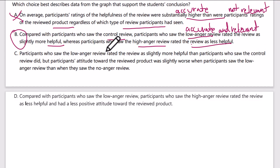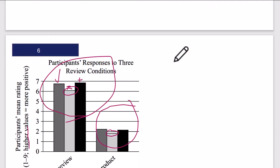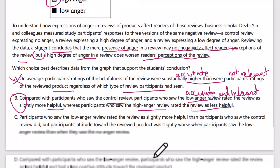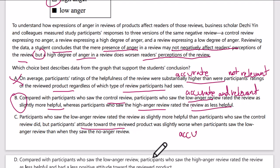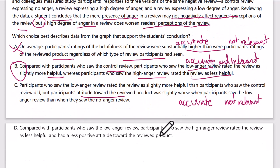Let's quickly check C and D. Answer C says participants who saw the low anger review rated it as slightly more helpful, but participants' attitude toward the reviewed product was slightly worse when they saw the low anger review than when they saw the no anger review. The second part is accurate — it was slightly negative for the reviewed product versus the control — but it's not relevant. Nothing about attitude toward the product answers how a high degree of anger affects the review.